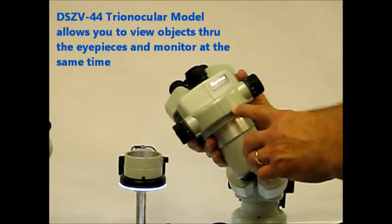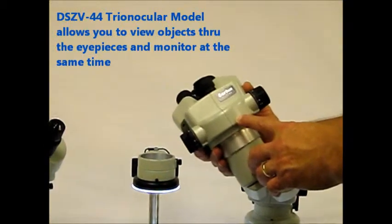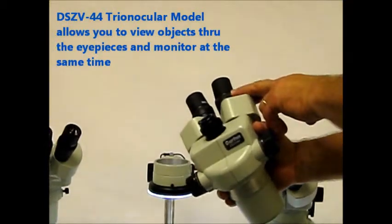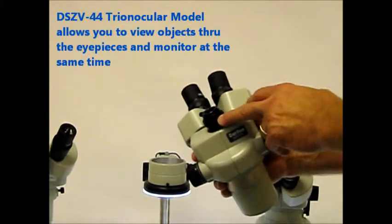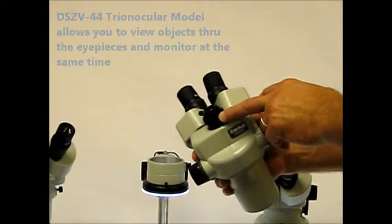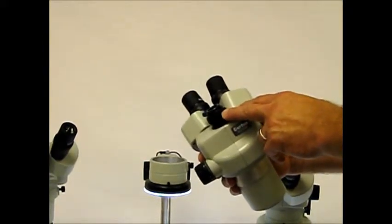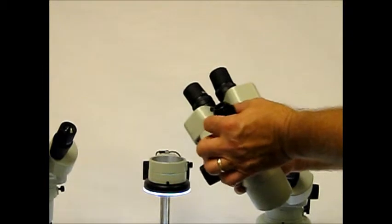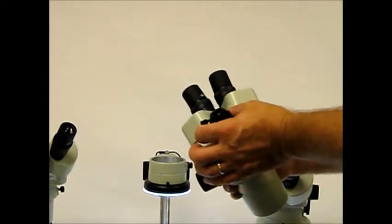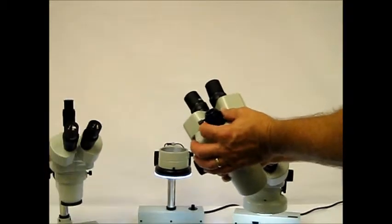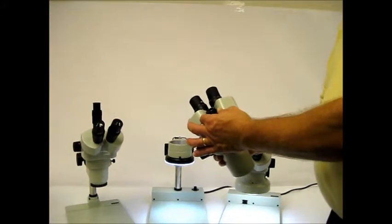One of the chief benefits of the DSZV44 is that what you see through your eyepieces you see simultaneously through your camera on the monitor. We have a C mount adapter and a CS mount adapter for this particular model and each of them comes with a fine focus ring for adjusting the image on the monitor.